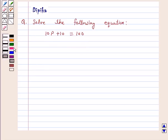So, let's start the solution. Our given equation is 10p plus 10 is equal to 100.